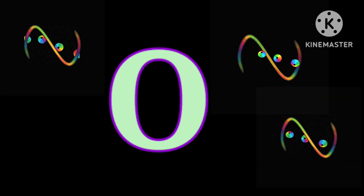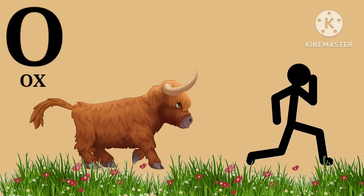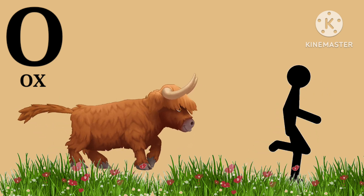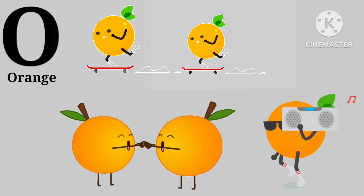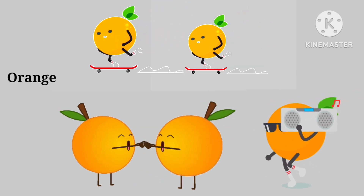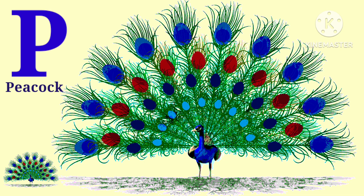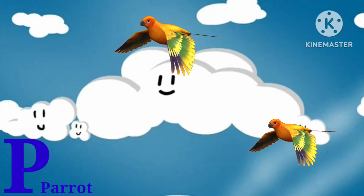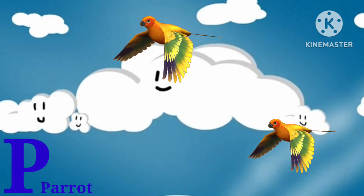O, it's capital O. O for ox, ox. O for orange. P, it's capital P. P for peacock, peacock. P for parrot, parrot.